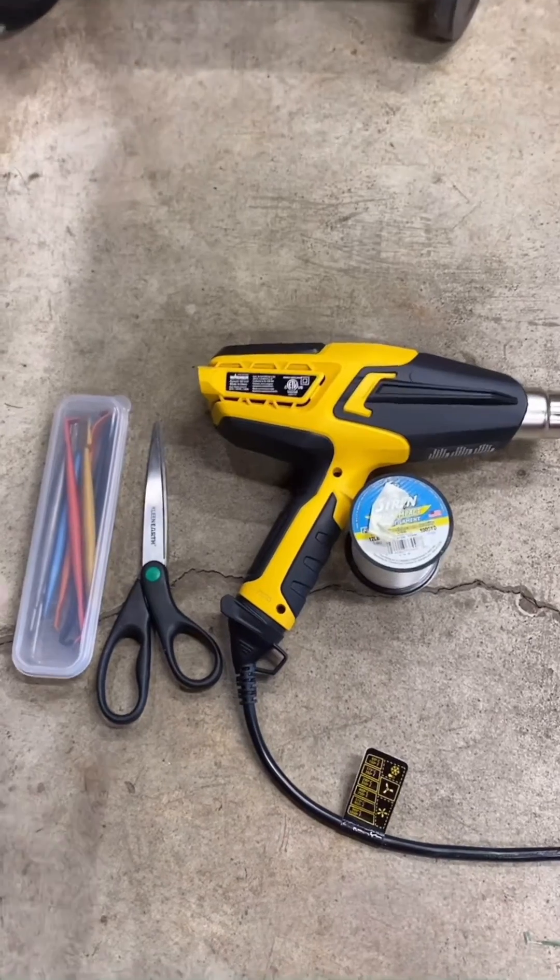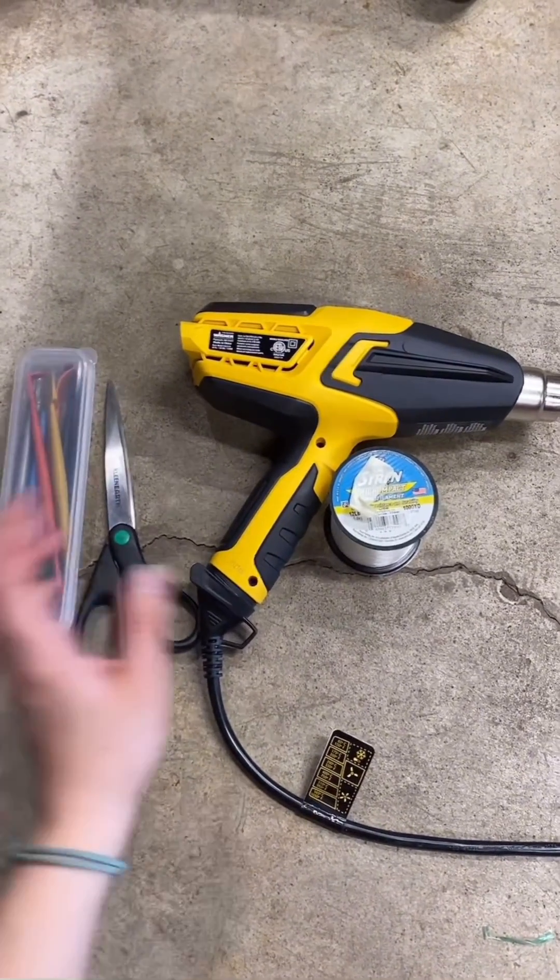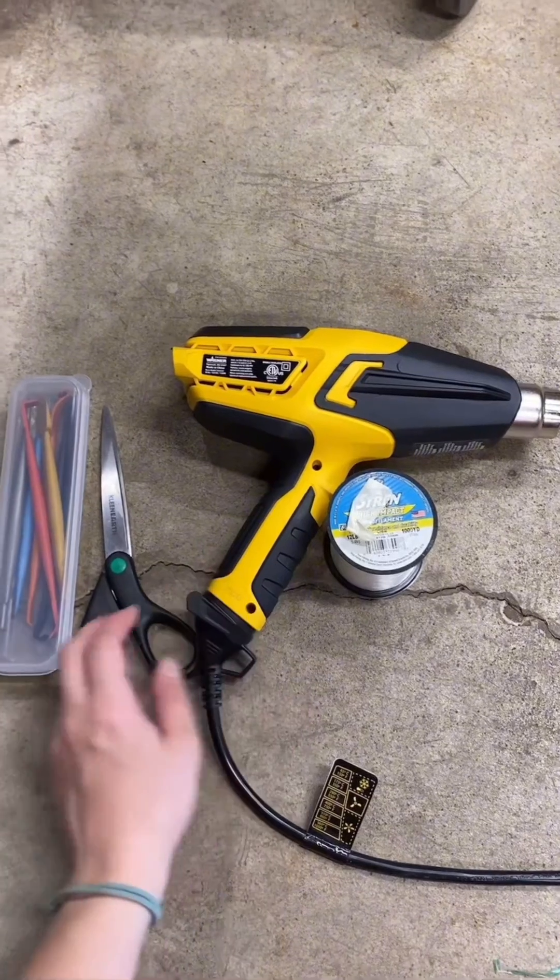For me personally, these are the tools I use. I like to use plastic pry tools, fishing line, heat gun, and then just some scissors to cut your fishing line.